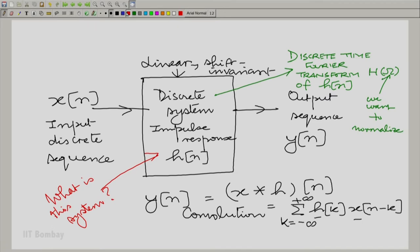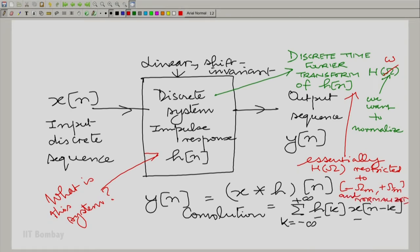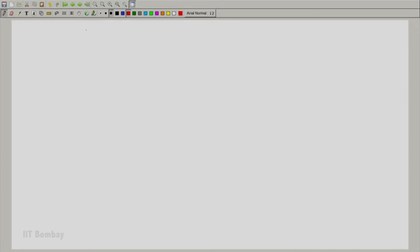We should strike out that capital omega and write small omega. That is the first change we need to make, and the discrete time Fourier transform of this is essentially the continuous time Fourier transform capital H omega restricted and then normalized. Let us draw that properly.